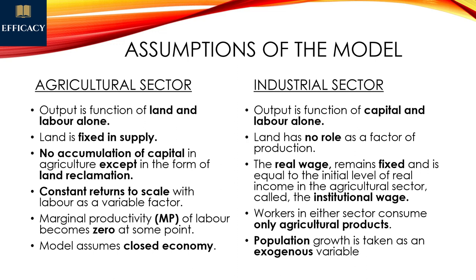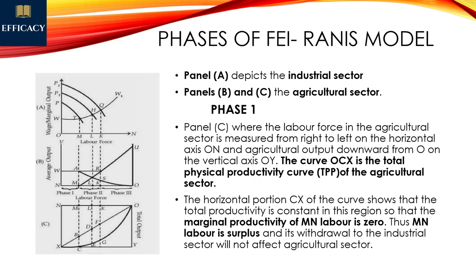Population growth is treated as an endogenous variable in this model. To understand the Fei-Ranis model, there are three different phases: Phase 1, Phase 2, and Phase 3. The original diagram from the book uses a panel diagram with two to three graphs to draw and explain.